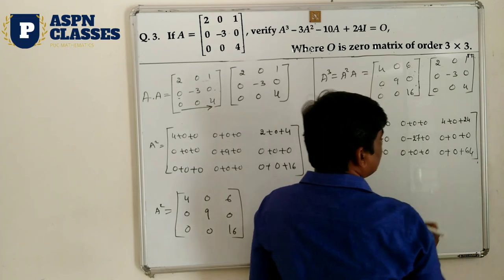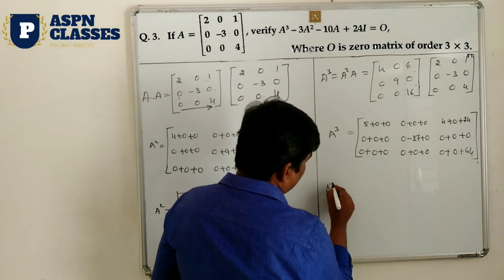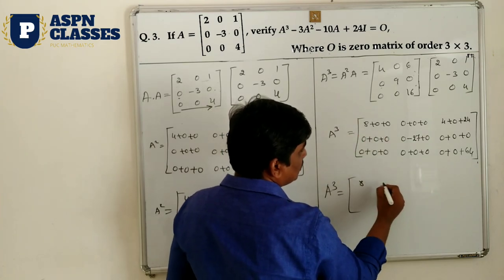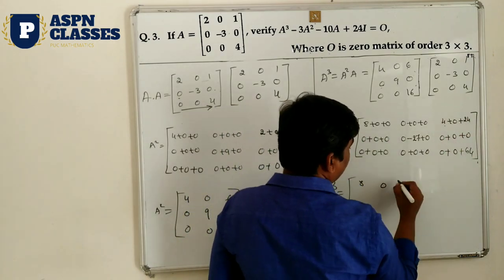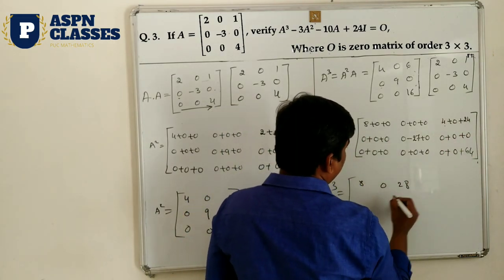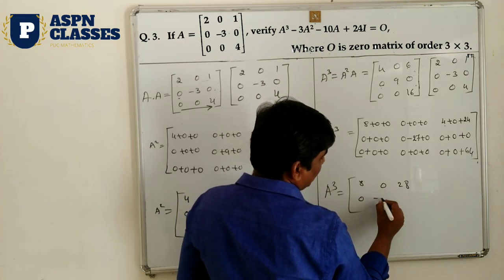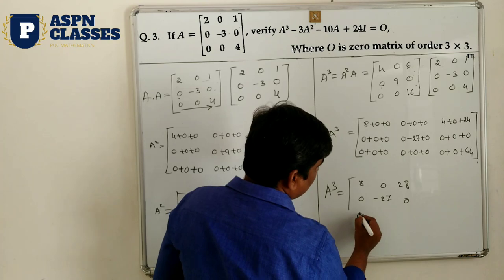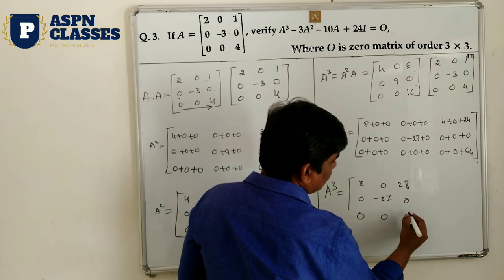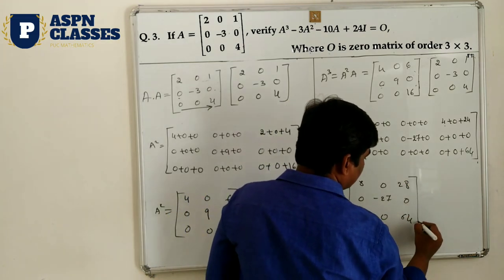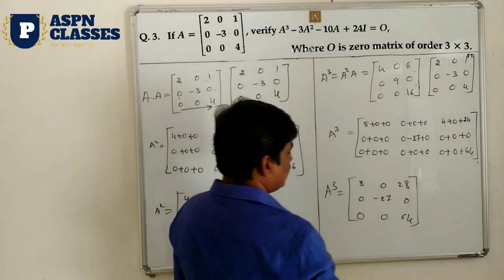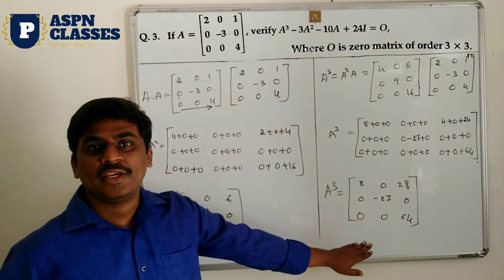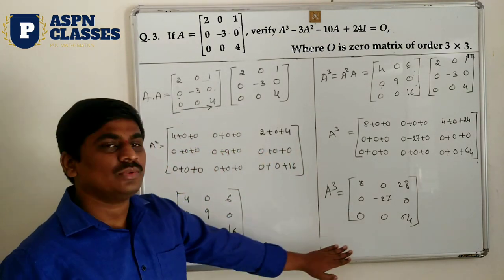Simplify the A cube result: first row [8, 0, 28], second row [0, -27, 0], third row [0, 0, 64]. Now you have both A square and A cube results. Remember these two results.